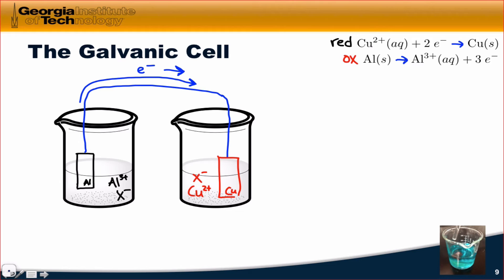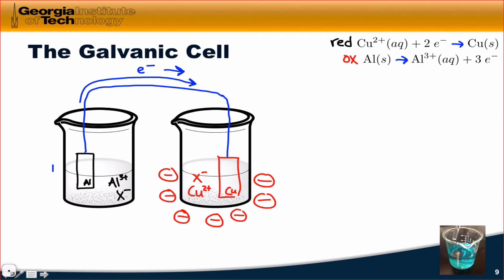However, there's a problem: we're causing charge separation as electrons flow and the redox reaction occurs. As Cu²⁺ forms copper metal, we're losing positive charges from the right-hand beaker, creating an excess of negative charge on the right — consistent with electrons flowing into this beaker. On the other hand, as electrons are removed from the aluminum and Al³⁺ is formed, we build up a surplus of positive charges in the other half-cell. The energy associated with this charge separation is huge. After just a little bit of charge separation, electrons will spontaneously flow back the other way. One way to think about this is that the galvanic cell in this configuration is basically acting like a big capacitor.